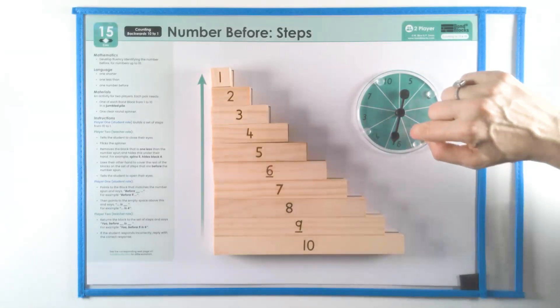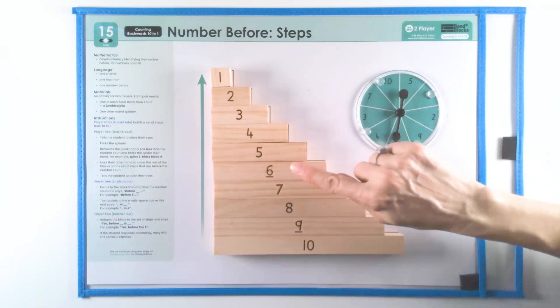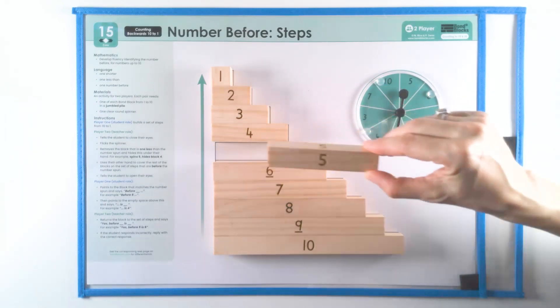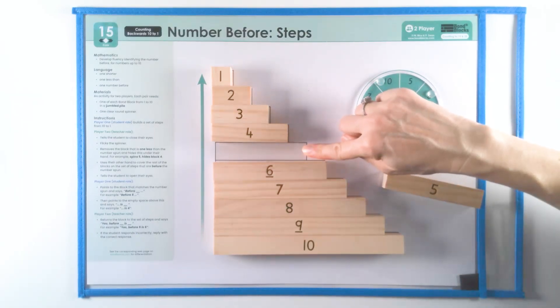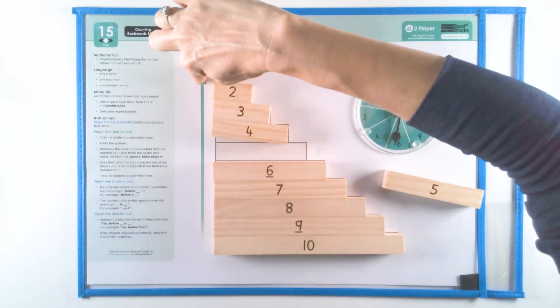So what we do is we flick the spinner. I do not remove the block that's spun. I'm going to remove the block that is one before. This block is one less than the number spun or one shorter. It's one block in this direction.